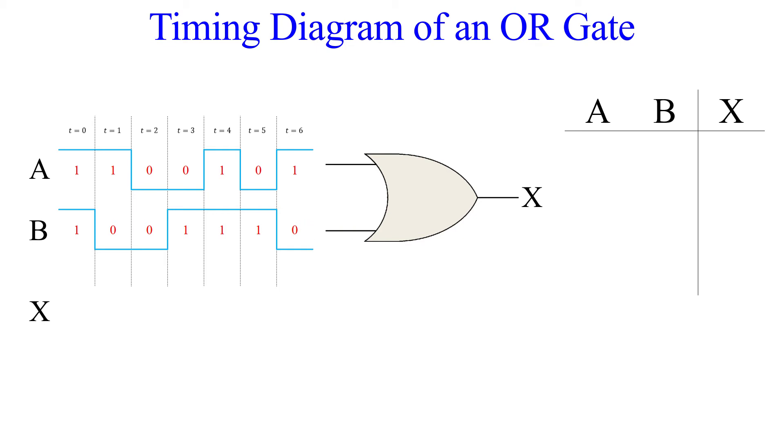Now we can fill out the table. The first row is t equals 0 on the timing diagram, row 2 is t equals 1, and so on. So what are the output values? If you said row 3 is low and everything else is high, then you are correct. This is the same as time t equals 2. So let's draw the output waveform on our timing diagram. And that's all there is to it.